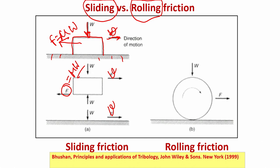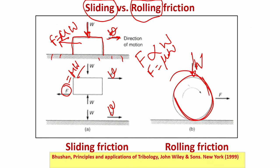From sliding friction, F is proportional to W, and the coefficient of proportionality is called the coefficient of friction, μ. So F = μW. For rolling friction, you apply load W and the ball rolls in contact with the flat surface rather than sliding. Rolling friction is much less than sliding friction — μ_sliding is much much larger than μ_rolling.